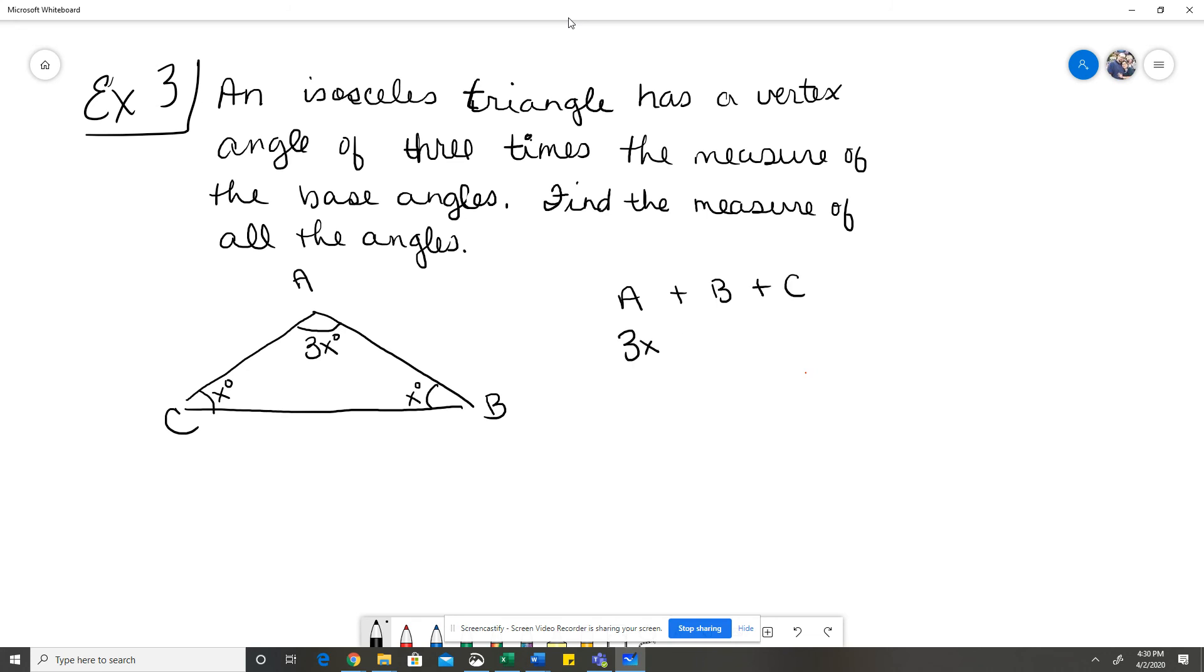So A is 3X, B is X, C is X, and they all have to equal 180 degrees. So 3X plus X plus X gives me 5X equals 180. And when I divide both sides by 5, we find out that each of our base angles is 36 degrees.